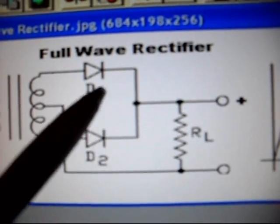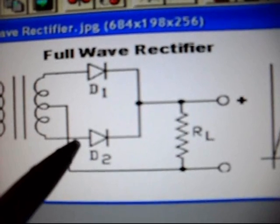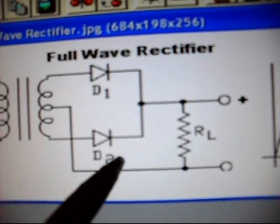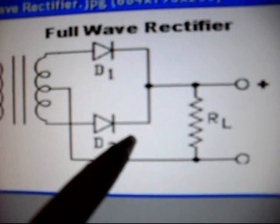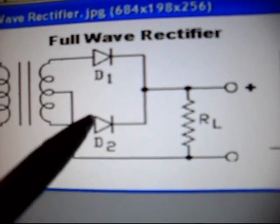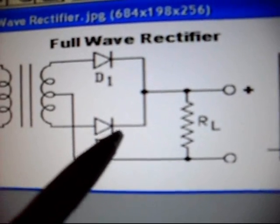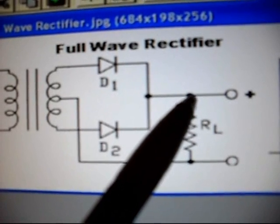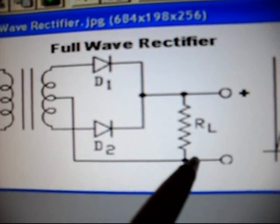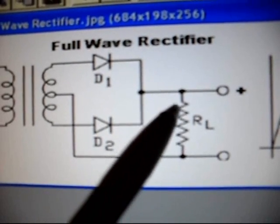On the second half of the cycle, the top of the secondary is negative with respect to the center tap, and the bottom is positive with respect to the center tap. Diode D1 is reverse biased and diode D2 is forward biased. D1 does not conduct, but D2 does. Remember that the bottom end of the transformer secondary is now positive, and when D2 conducts, current flows downward through the load resistor, making its top end positive. Current flows through the load on both halves of the input sine wave, and both halves appear positive across the load.